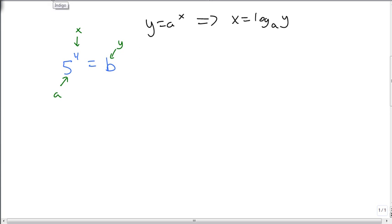So I'm going to rewrite this as x, which is 4, equals log base a, which is 5 of b. So what's currently off of the 5 gets added onto it. What's currently on it gets added off of it.